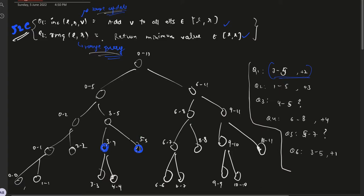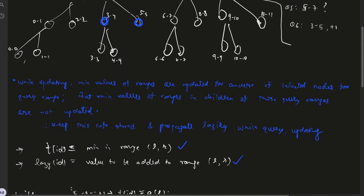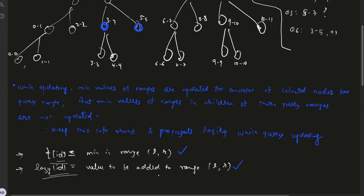If we didn't have this range update operation, the question would have been a simple segment tree question where we would have maintained array T, where T represents the minimum value present in the range L to R. But since we have a range update as well, we need to store another structure for that. We will call that lazy. The lazy of id represents the value to be added to the range L to R.